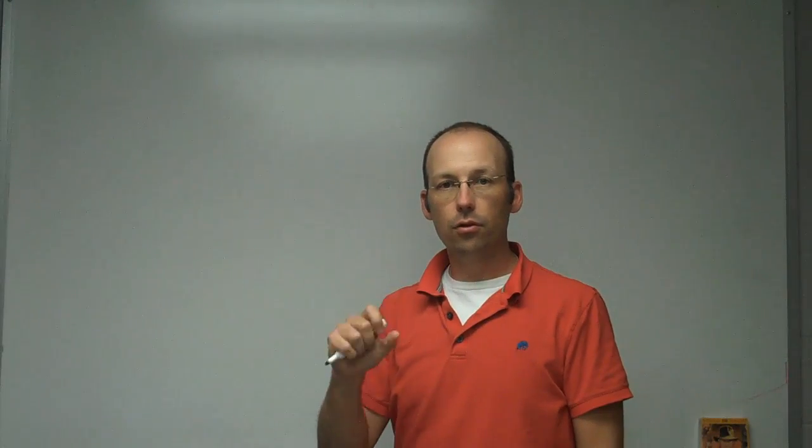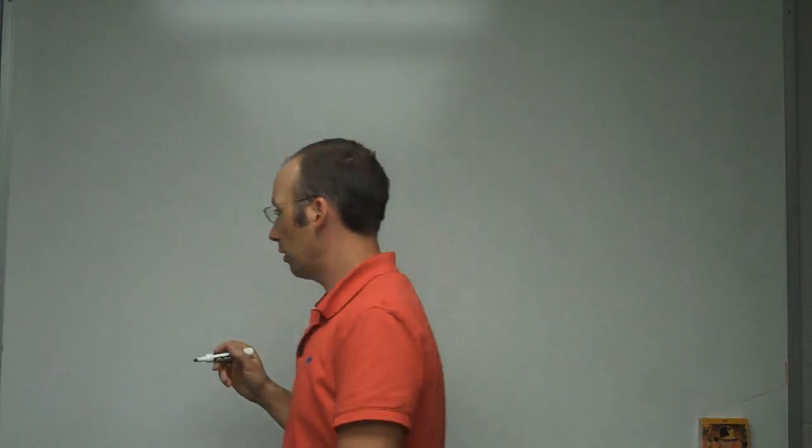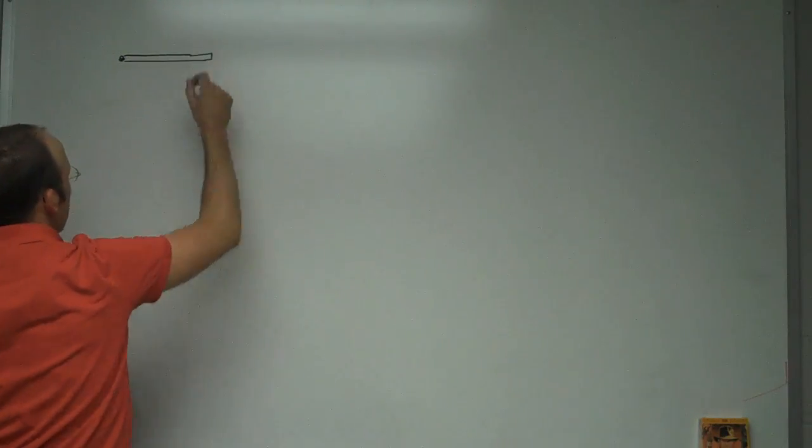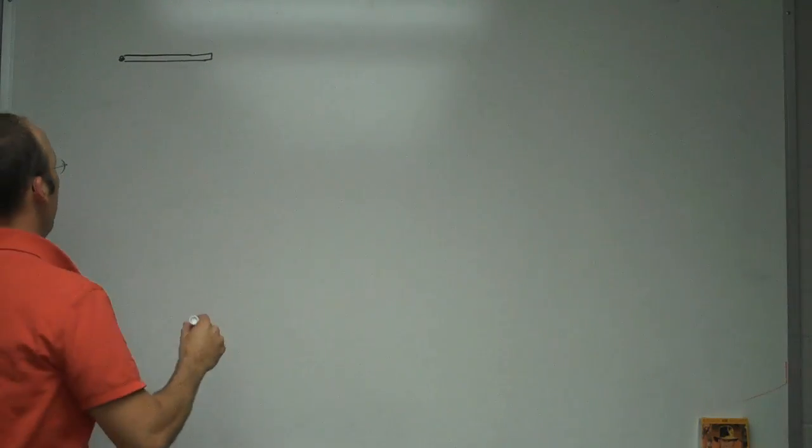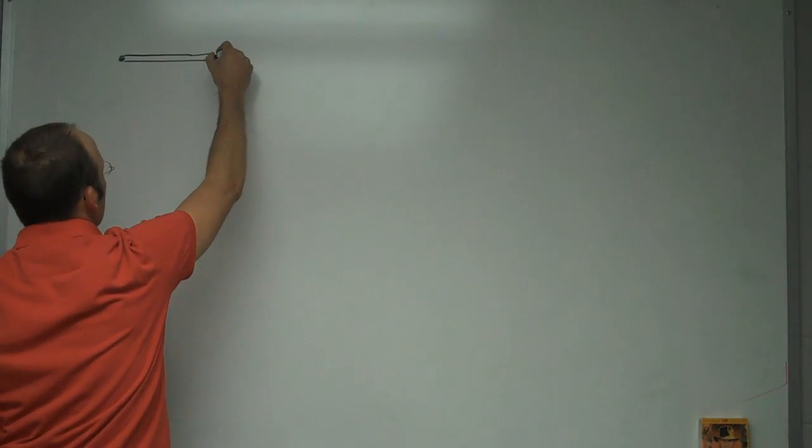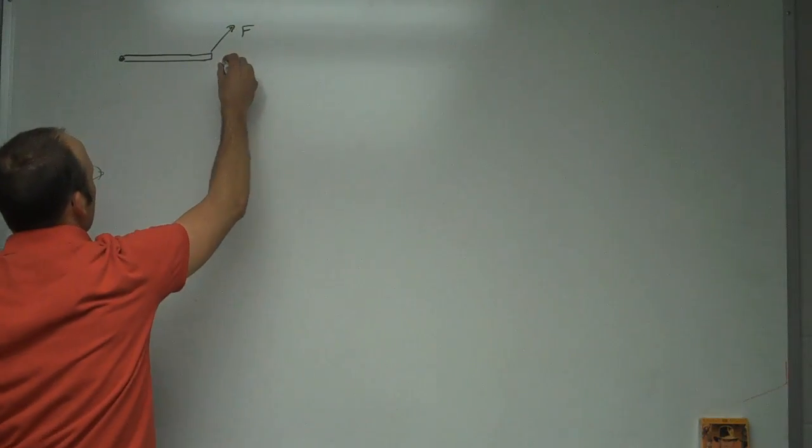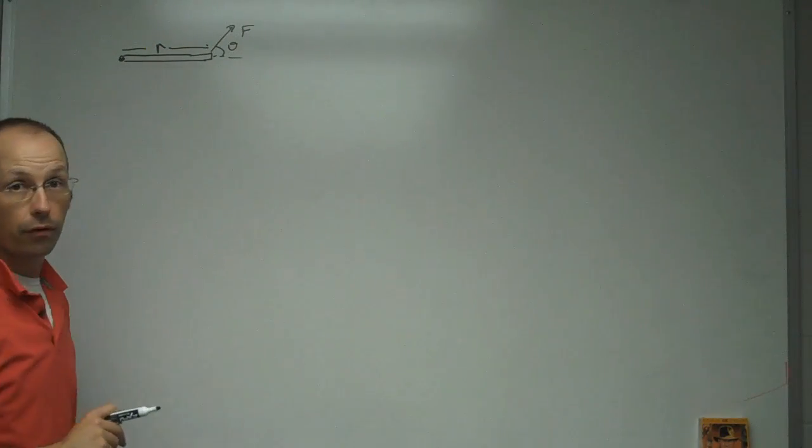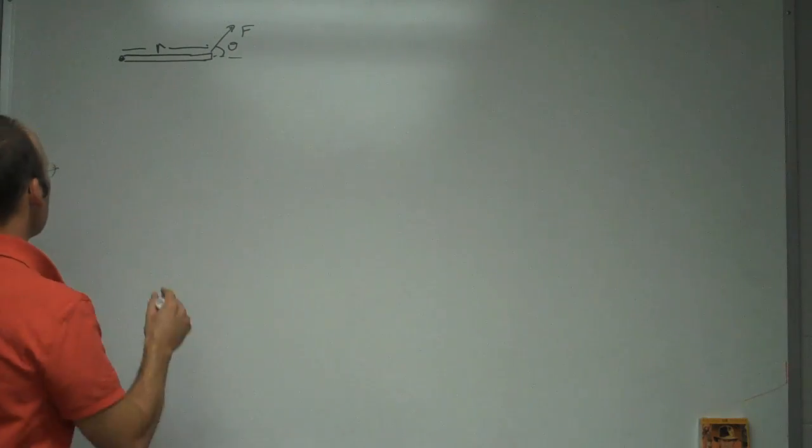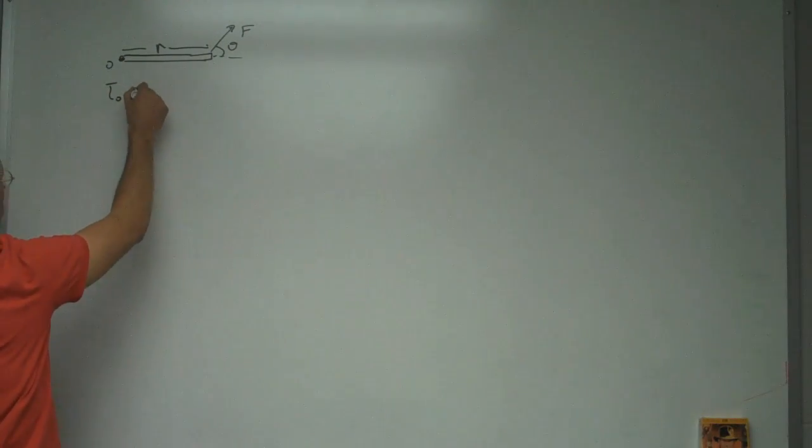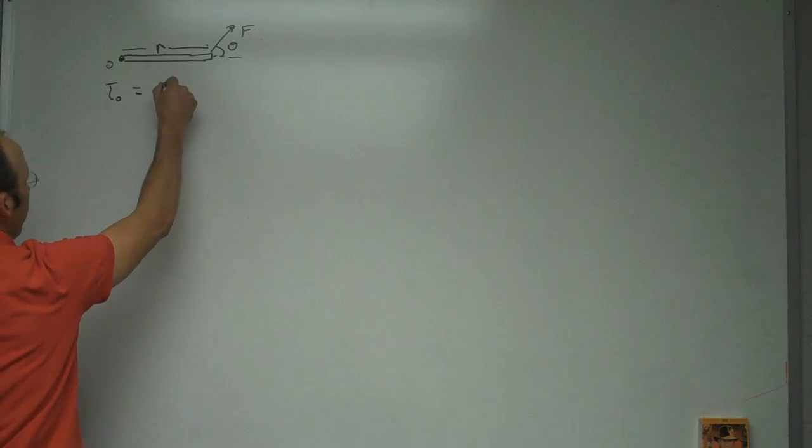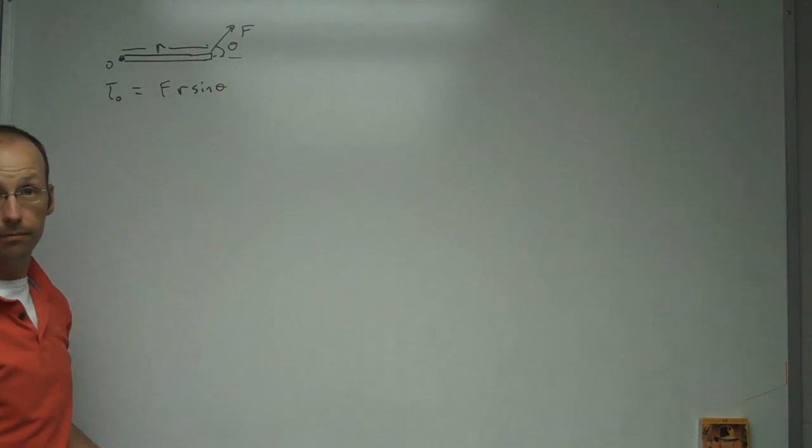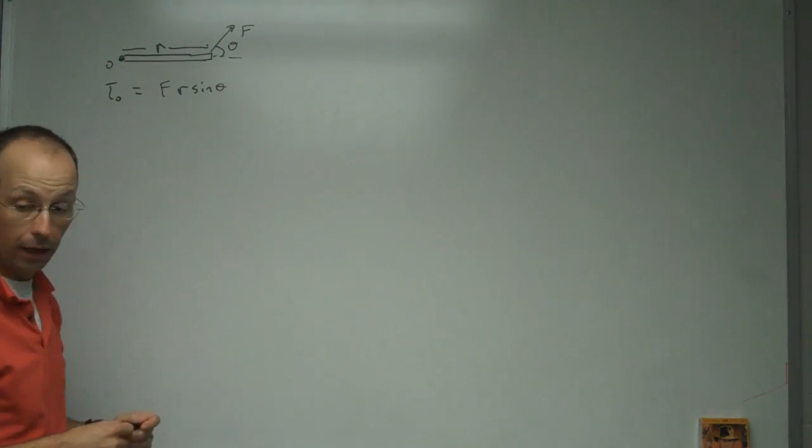Let me show you three ways that you can calculate the torque. So suppose I have some pivot point with a stick, and I push with some force like that F, and this is an angle theta, and this is a distance R from the point of rotation where the force is. So this is point O. The torque about that point O, the first way would be to say F times R times sine theta, where theta is the angle between R and F.